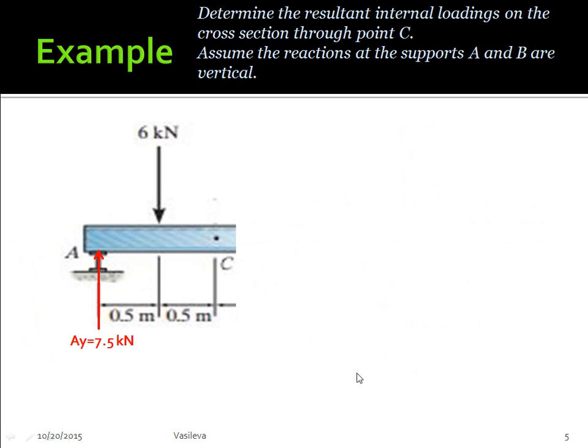Now, once we've found AY, we want to find the resultant internal loadings at point C. Basically what I'm going to do is just cut the beam at point C, and that will allow me to find all of the internal loadings. We have three types of internal loadings. We have the normal force loading, which I would call NC. The shear loading, VC. And the moment, MC. So we need to find all three of these in order to fully solve the problem.